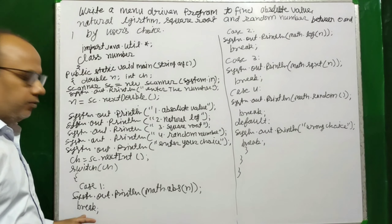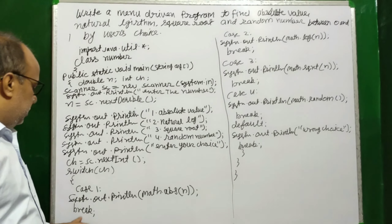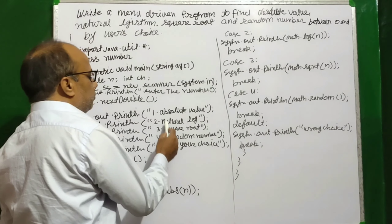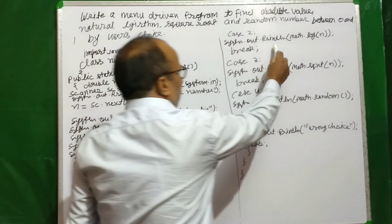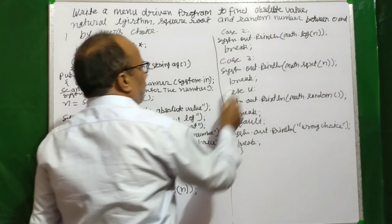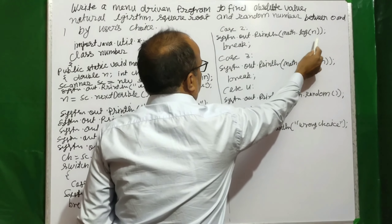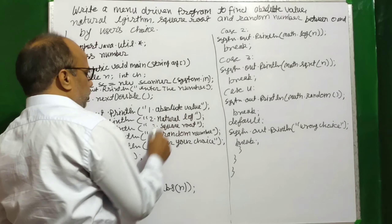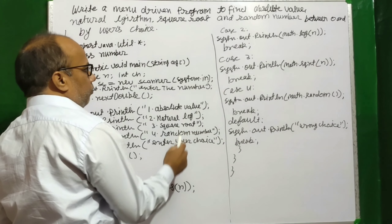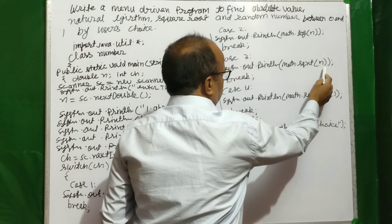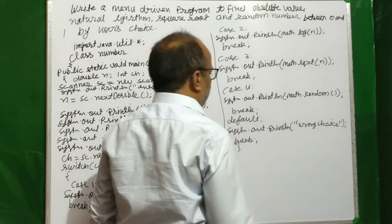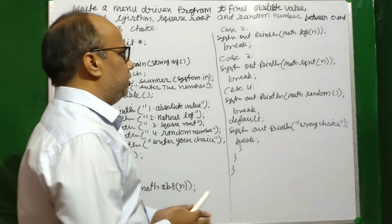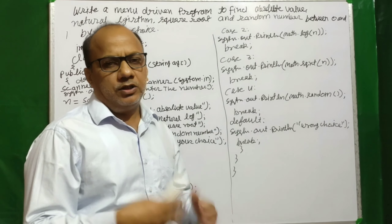Break हो जाए। इसके बाद case 2 है — अगर user दूसरा option choose करता है, उसी number के लिए square root: Math.sqrt(number) — यह उस number का square root निकालेगा, break हो जाएगा। Case 3 में क्या है — zero और one के बीच कोई भी random number system खुद print करेगा।